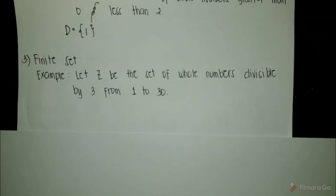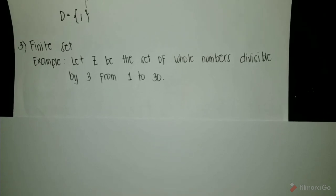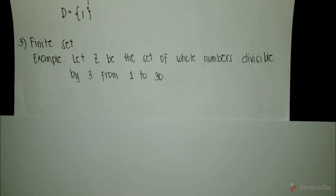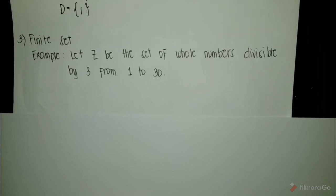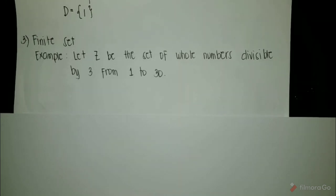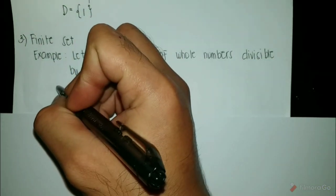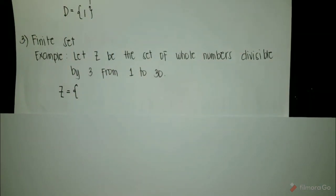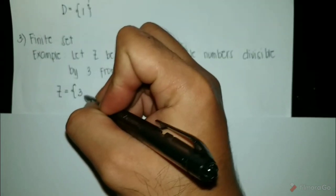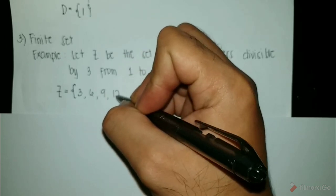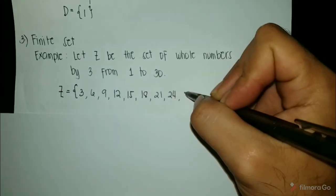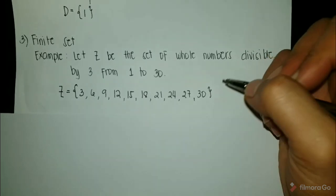Next is the finite set. A finite set is a set which contains a definite number of elements, meaning the elements inside our set will only be limited. For example, let Z be the set of whole numbers divisible by 3 from 1 to 30. The elements of set Z are 3, 6, 9, 12, 15, 18, 21, 24, 27, and 30. As you can see, we only have 10 elements, which is limited.